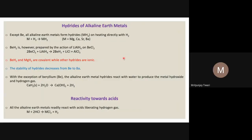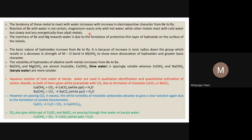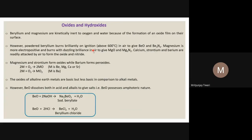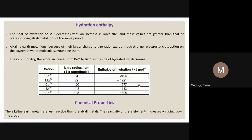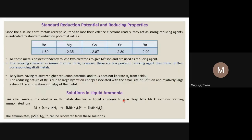Good morning students. In our last class we started the topic of alkaline earth metals, including their chemical properties. We covered oxides and hydroxides of alkaline earth metals, how they are formed, their general properties, standard reduction potential, solutions in liquid ammonia, hydration, and solvation.